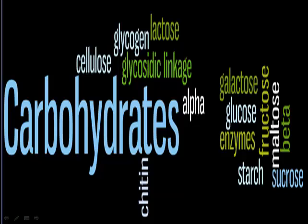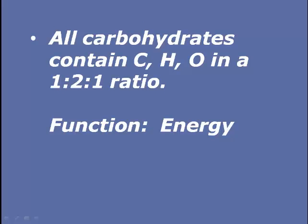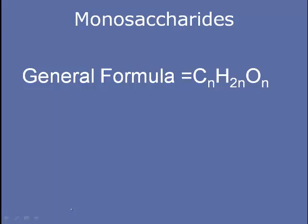We'll look at carbohydrates first. All carbohydrates contain carbon, hydrogen, and oxygen in a 1 to 2 to 1 ratio. We see this in the glucose molecule where we have twice as much hydrogen as we have carbon or oxygen. The function of carbohydrates is energy storage and structural. Let's look at the simplest carbohydrates, the monosaccharides — simply meaning single sugars. The general formula is a 1 to 2 to 1 ratio of carbon to hydrogen to oxygen.